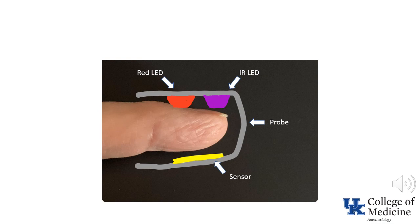The illustration shows the probe, in gray, around a finger. The probe's two LEDs are represented by the red and purple blobs, which are supposed to indicate the red and infrared LEDs respectively. The sensor, shown in yellow, is also evident.